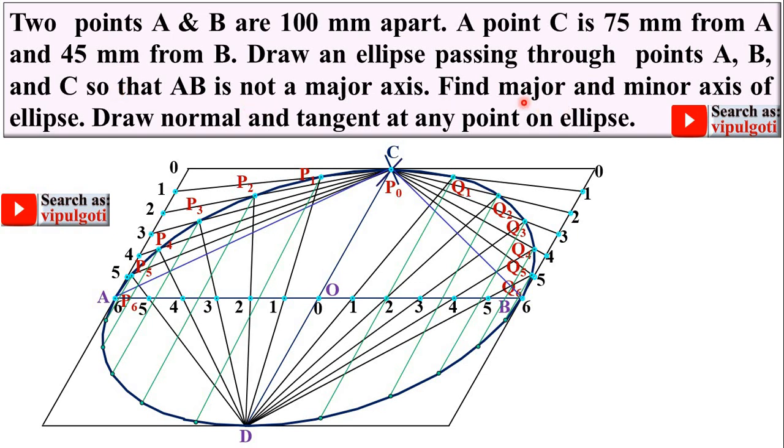Now next, find major and minor axis of ellipse. So keep in mind here AB and CD are not the major and minor axis respectively, but we are going to find the major and minor axis of this ellipse. So first you have to draw the arc with O center and OC as the radius with the help of compass. And this arc will intersect the ellipse at this point. Mark this point as G. Join C, G.